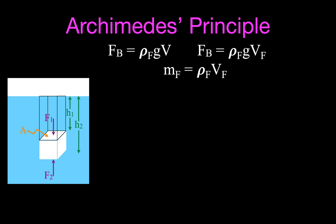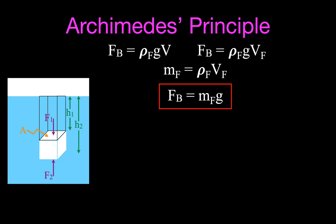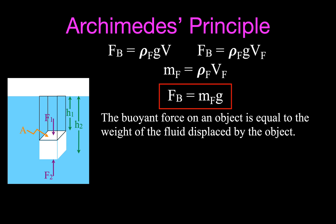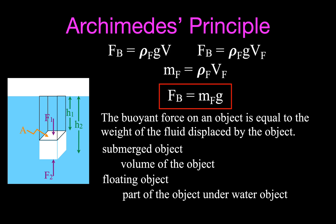Substituting that in, the buoyant force equals g times the mass of the fluid. Mass times g is simply the weight of the fluid. This is Archimedes' principle: the buoyant force on an object equals the weight of the fluid displaced by the object. If the object is fully submerged, it's the volume of the object; if floating, it's the volume of the part under water.